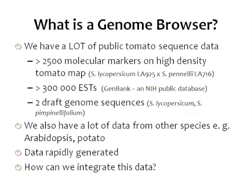It's clear based on the previous talks that there's a lot of public information available related to tomato sequence. For example, there are more than 2,500 molecular markers on the high density tomato map, and more than 300,000 ESTs in GenBank, which is part of the NCBI website. We also have 2 draft genome sequences, and data from other species that may be helpful, including Arabidopsis and potato.